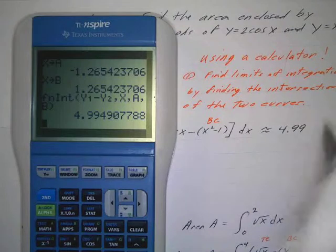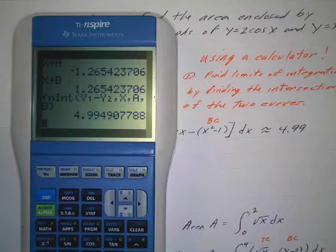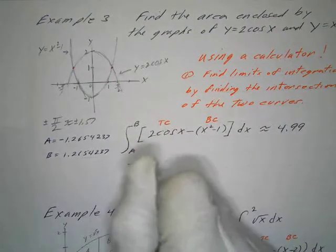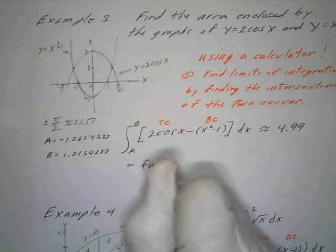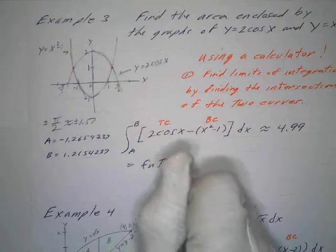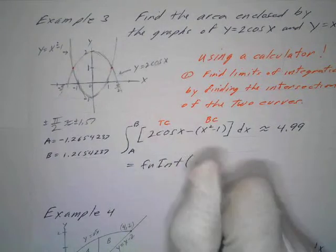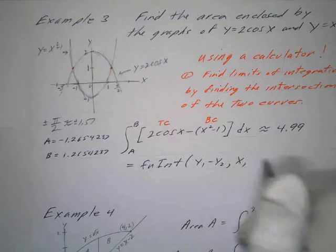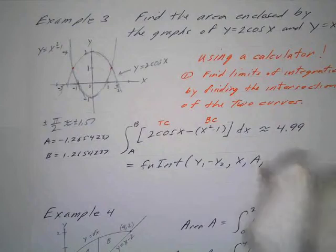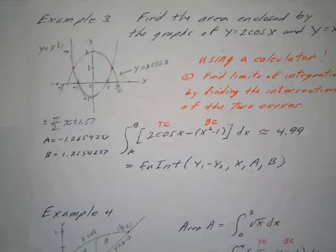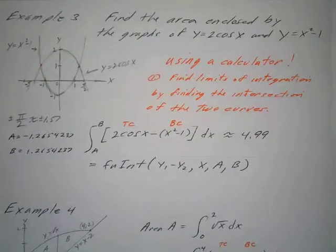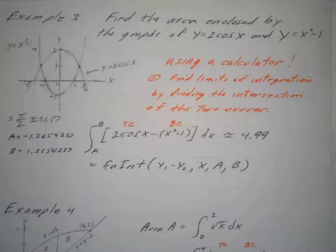4.99. Okay, and again, just so you can see how that's done, we did this f n i n t, and then we did y1 minus y2, comma x, comma a, comma b. And you'll use this technique a lot, and you've got to get pretty fast at it, so it was probably worthwhile spending the time to do that one. So that's example three.